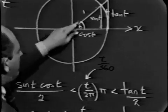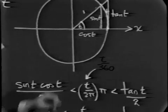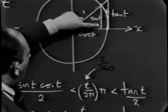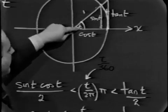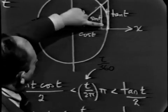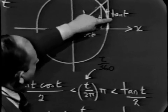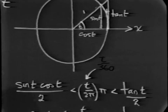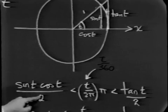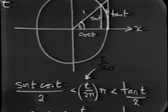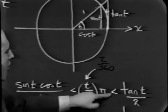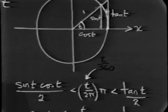And finally, the bigger triangle, which includes the wedge, has as its base 1. So that's the radius. And since the tangent is side opposite over side adjacent, this length is tangent t. And so what we have is that sine t, cosine t over 2 must be less than this, which in turn must be less than this.